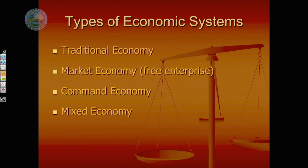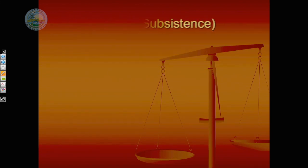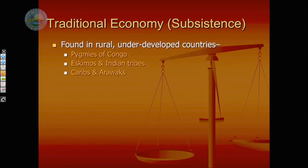The four economic systems we're going to look at today: the first is traditional, also known as subsistence; number two is market economy or free market, also called laissez-faire; command economy, also known as planned economy; and the last one is mixed economy. So let's look at the first one — traditional economy, also known as subsistence.